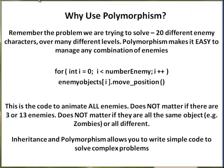Why use polymorphism? Remember the problem we're trying to solve: twenty different enemy characters over many different levels. Polymorphism makes it easy to manage any combination of enemies. At the start of each level, I'm assigned a certain number of enemies to battle — five on easy, ten on medium, fifteen on hard. That value is assigned to a variable, number enemy, and that many enemy objects are created and placed into an array of enemy objects.